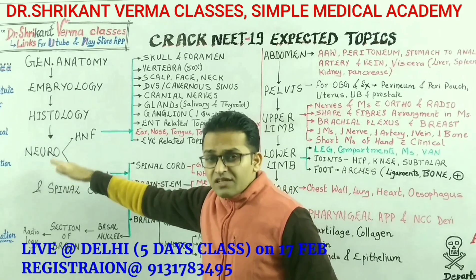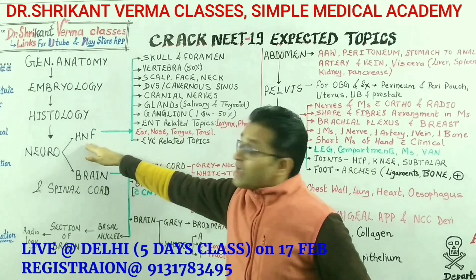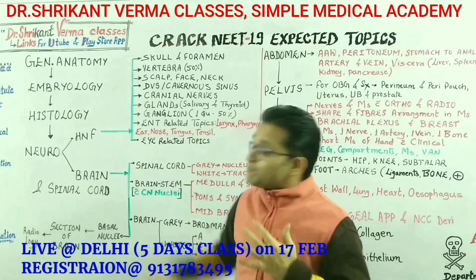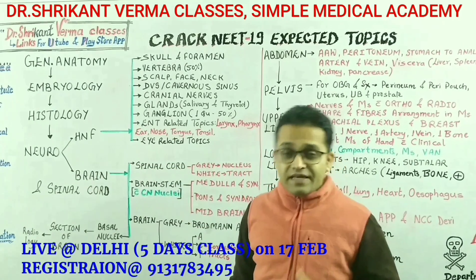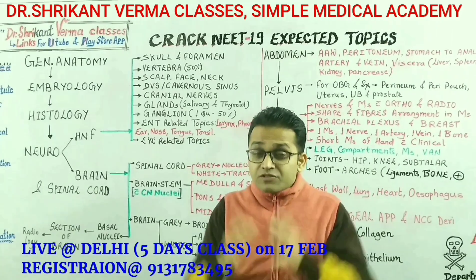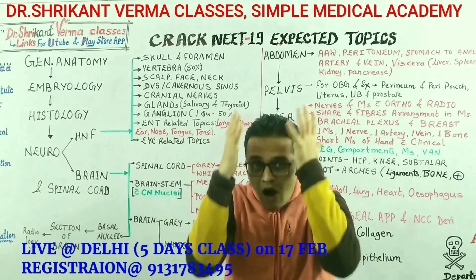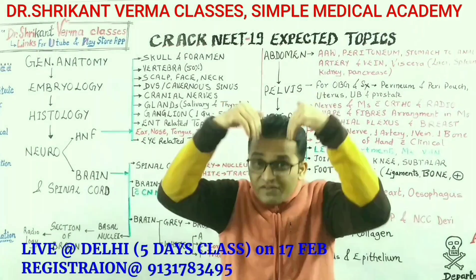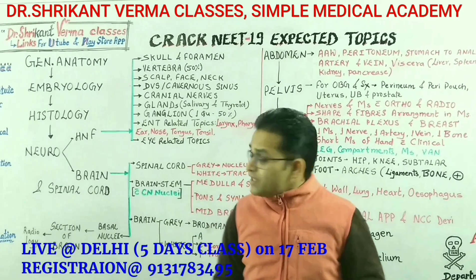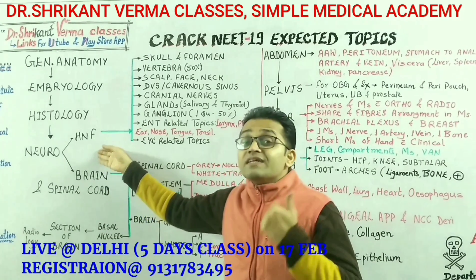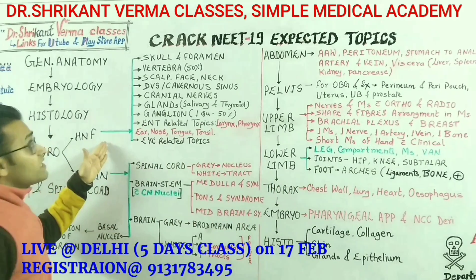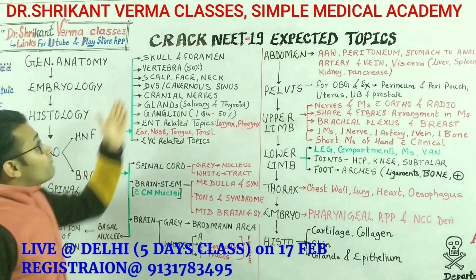The neuro part can be divided into the head, neck, face part and your brain and spinal cord part. How will we study the neuro? First we are going to describe the outer part, then we will go for the inner part for better understanding. So for the head, neck, face part, what are the various important topics? Can you see? For the head, neck, face part, first we have to deal with the skull and the foramen.